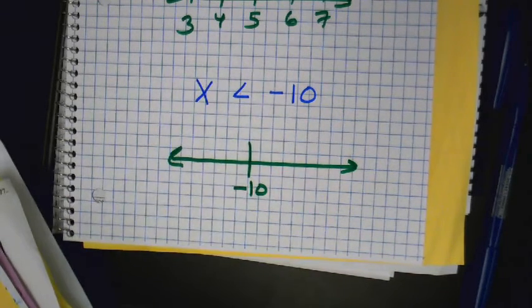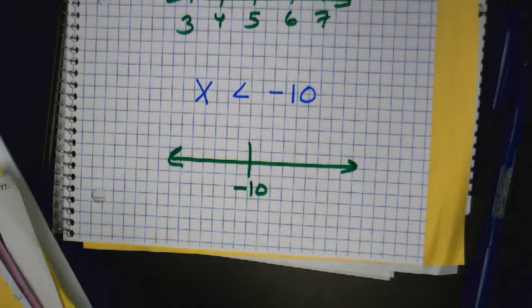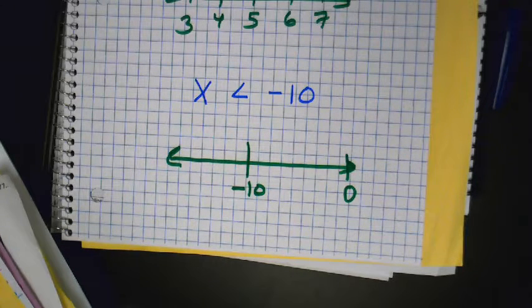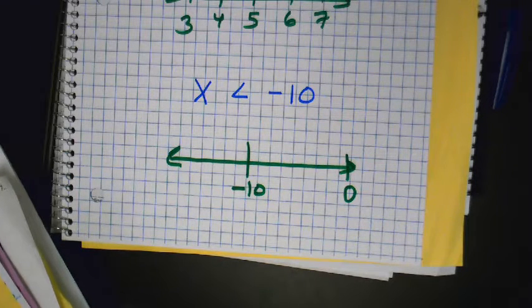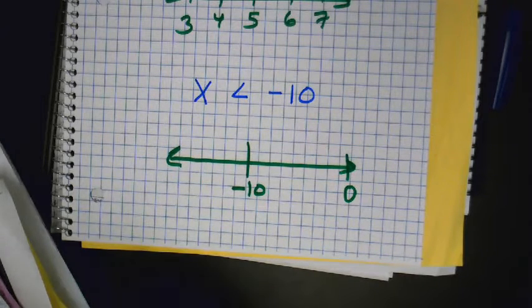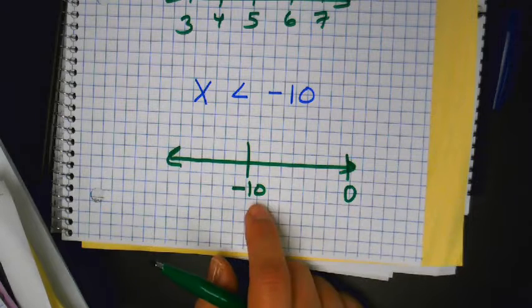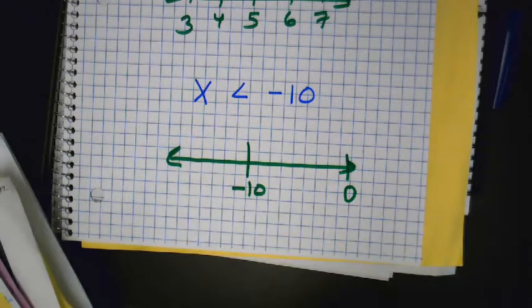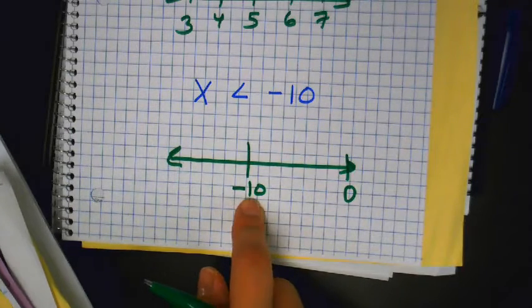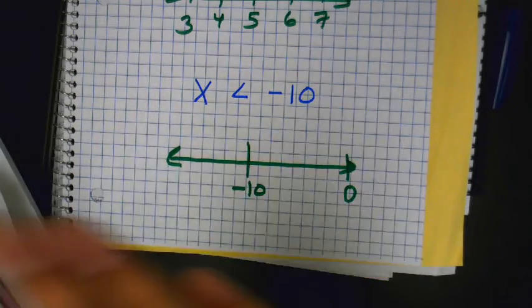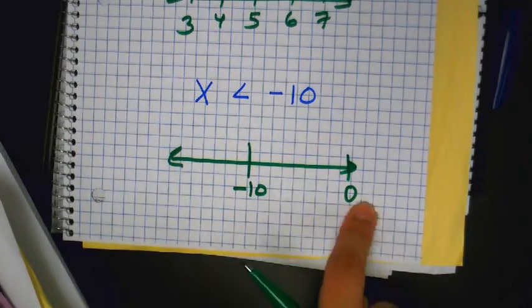I always tell my kids: where is 0? When you're in negative land, the number one mistake kids make is they put the numbers on the wrong side — they'll switch left and right. So I always tell students: where would the 0 be? The 0 will always be on the right-hand side when your center number is negative. For example: 10, 0, negative 10 — that's the order.